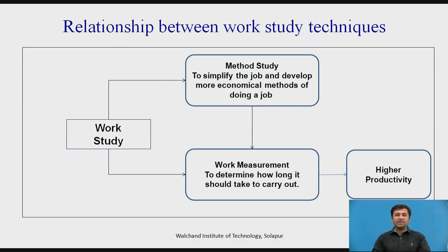Now we see a simple diagram which shows the relationship between work study techniques and higher productivity. Work study consists of two major components: first is method study and then is work measurement. The diagram shows that method study can be carried out first, or work measurement can be carried out directly. Alternatively, after carrying out method study, we can carry out work measurement, which leads to higher productivity.